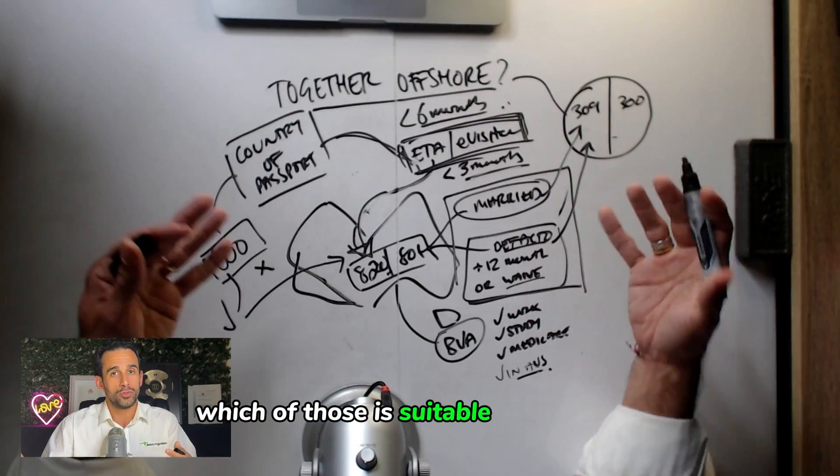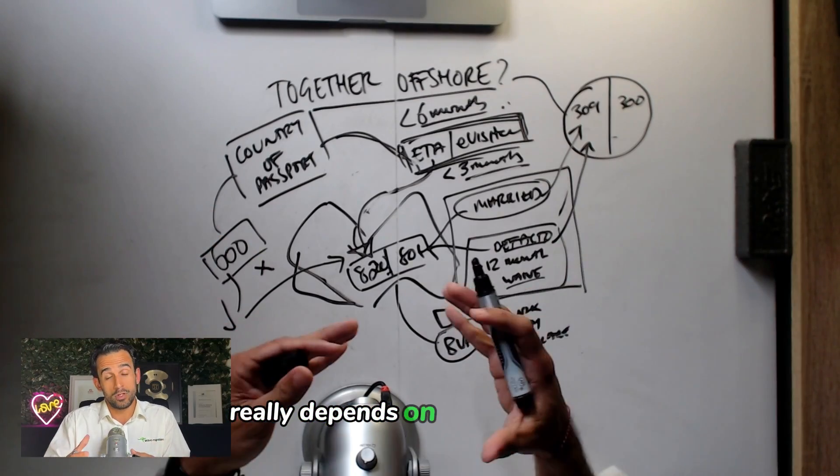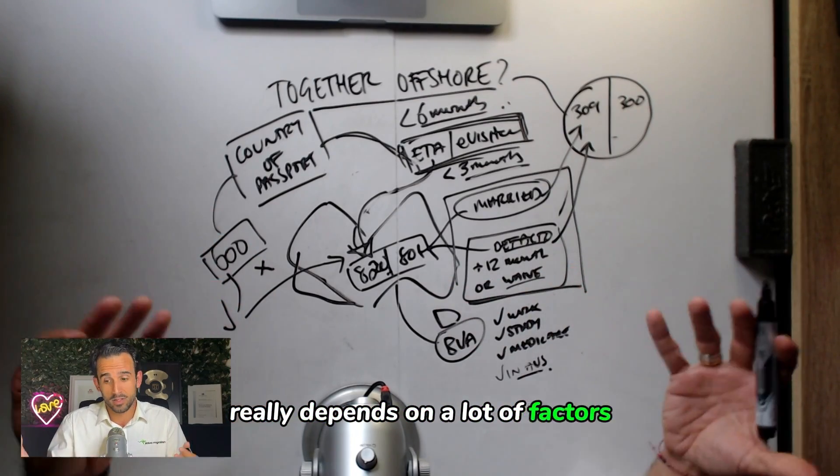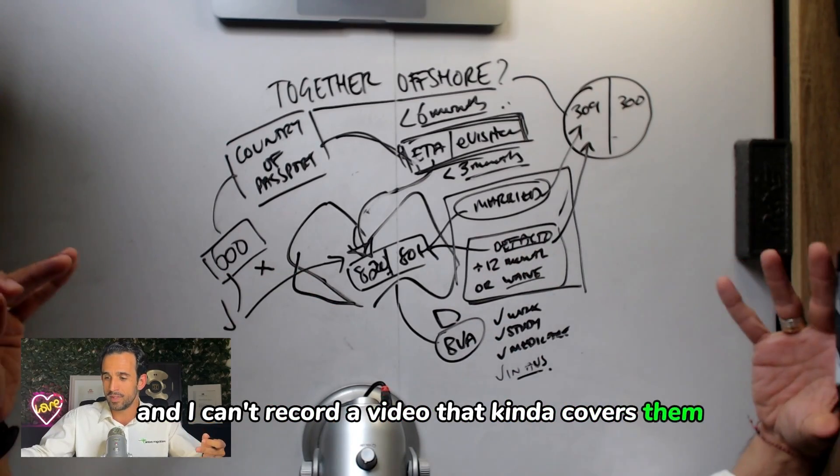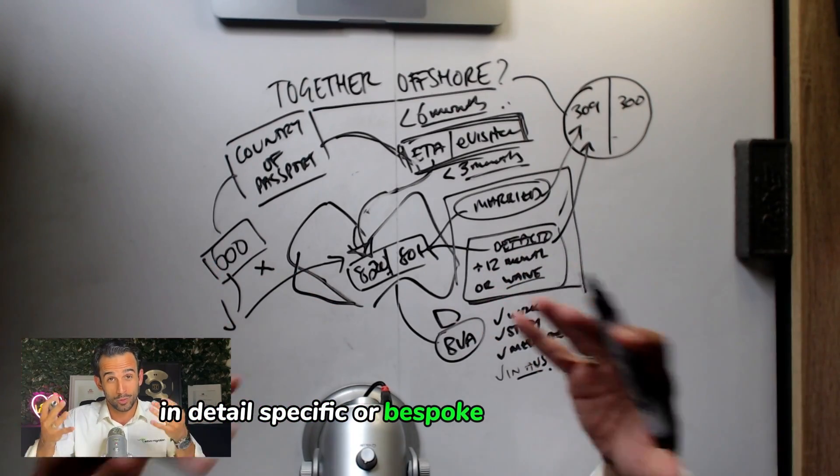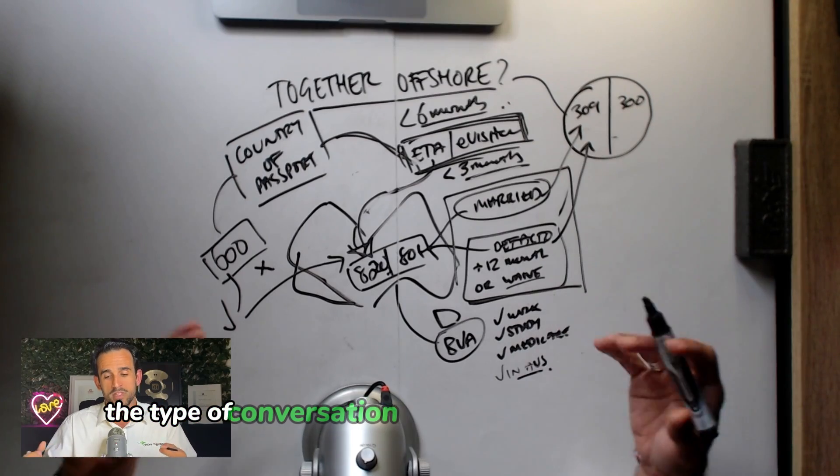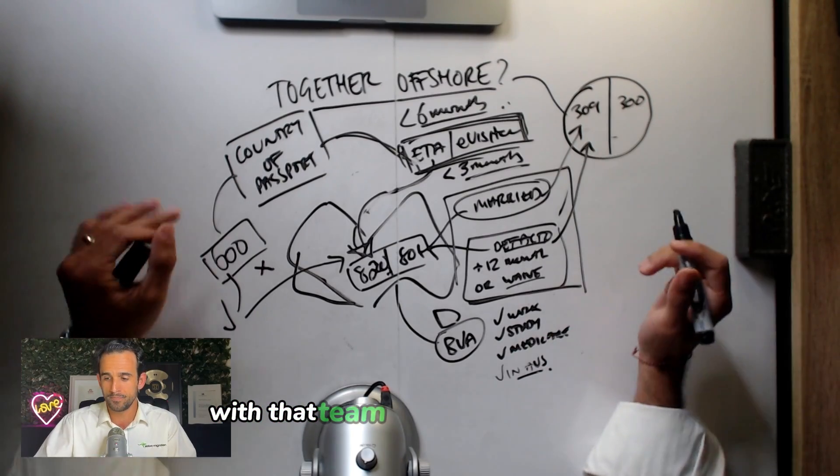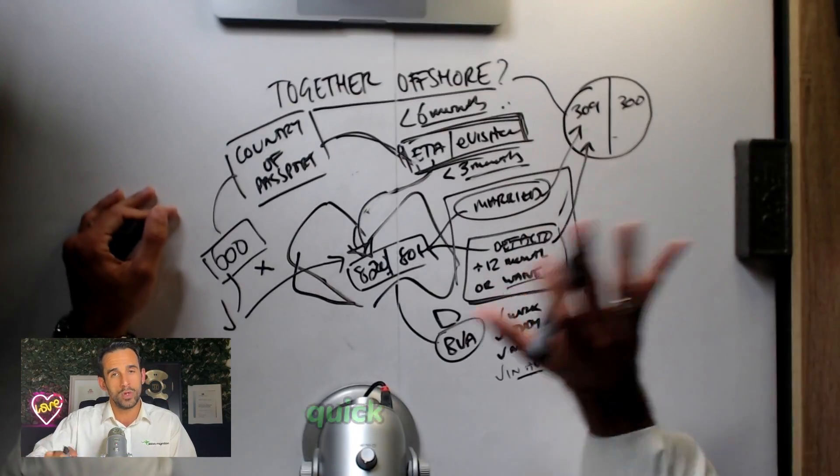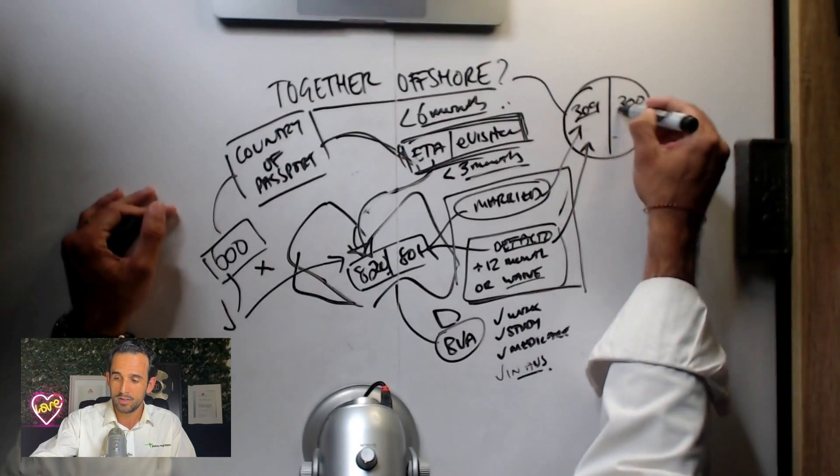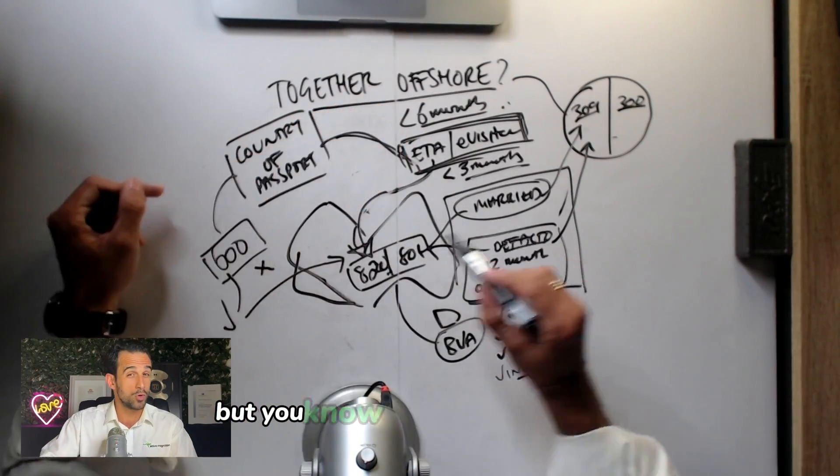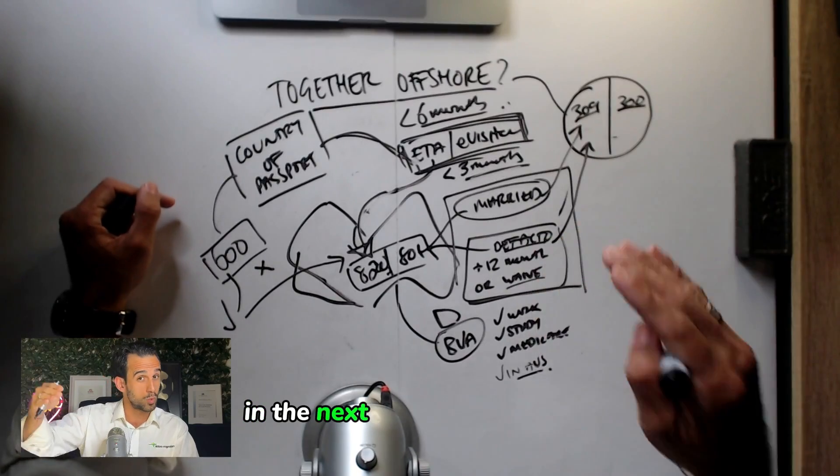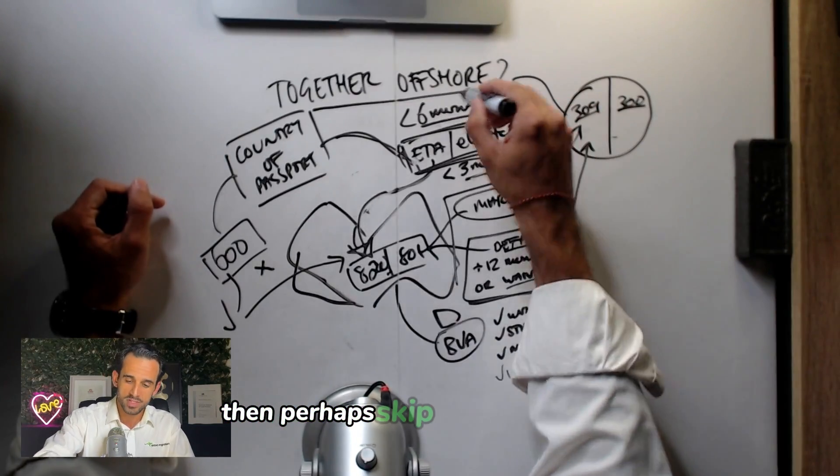Which of those is suitable to your facts really depends on a lot of factors, a lot of variables, and I can't record a video that covers them in detail, specific or bespoke to your situation. That is, of course, the type of conversation we can have with people that book calls with our team. But a quick summary, a quick recap, is that if you have no immediate need to come right now, but you know it's in the near future, in the next 12 months or more, then perhaps skip this altogether.